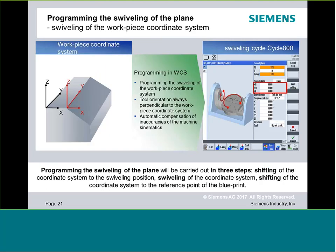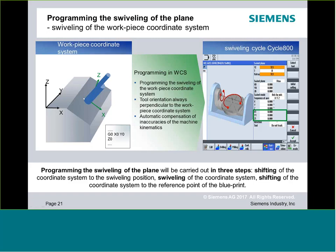How does Cycle 800 work? First, it allows you to slide or move your coordinate system. Second, it lets you rotate. Third, it allows one more coordinate system shift. So you take your zero, slide it to a point, rotate, then slide to a new location — establishing a new zero not only in angular orientation but in a new linear position too. That's all handled inside Cycle 800.